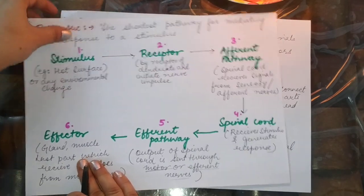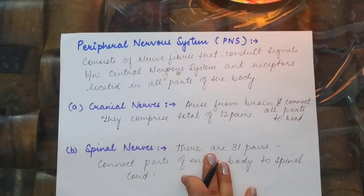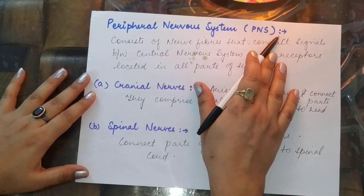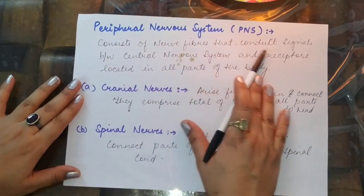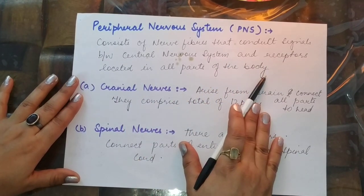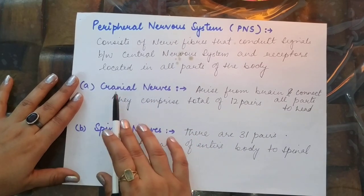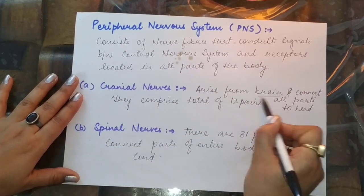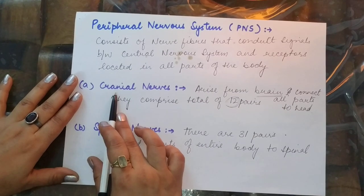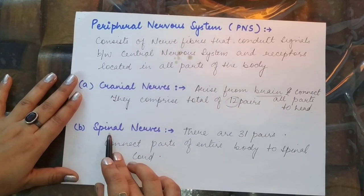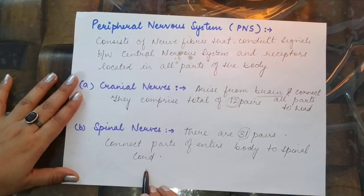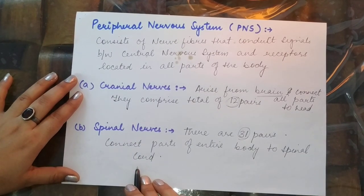The last topic in human nervous coordination is the Peripheral Nervous System (PNS). It consists of nerve fibers that conduct signals between the central nervous system and receptors located in all parts of the body. The PNS has two parts: cranial nerves, which arise from the brain and connect all parts of the head — there are 12 pairs — and spinal nerves, which arise from the spinal cord and connect parts of the entire body, totaling 31 pairs.